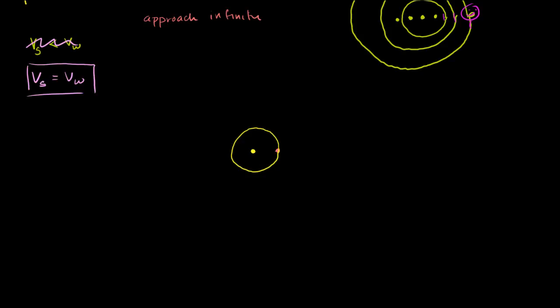Now where was this character two periods ago? When I talk about the period, I'm talking about the actual period of the wave—how long does it take between similar points in the cycle. And I like to think of them as the crests in the cycle. So two periods ago, he was here and he released a pulse or a crest.